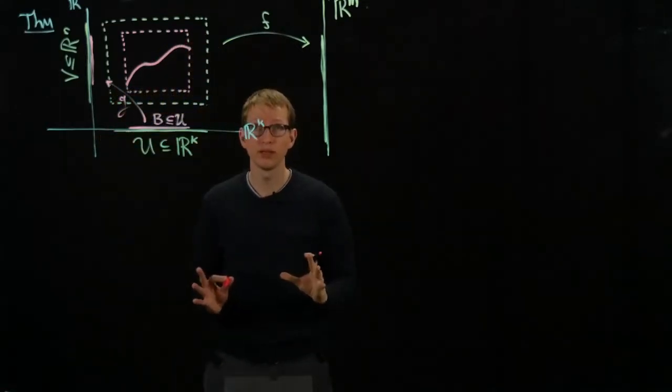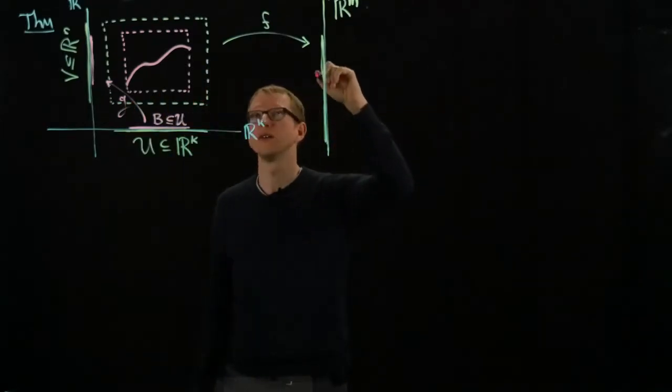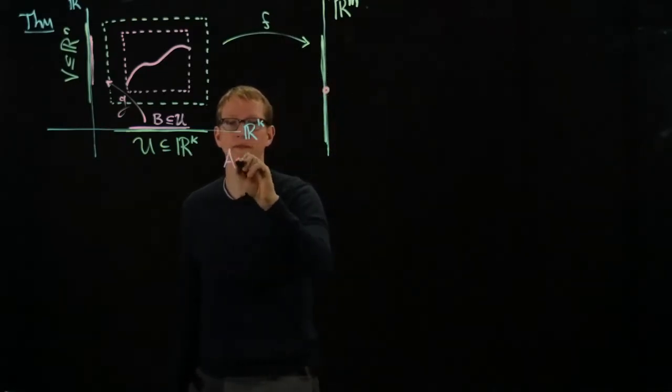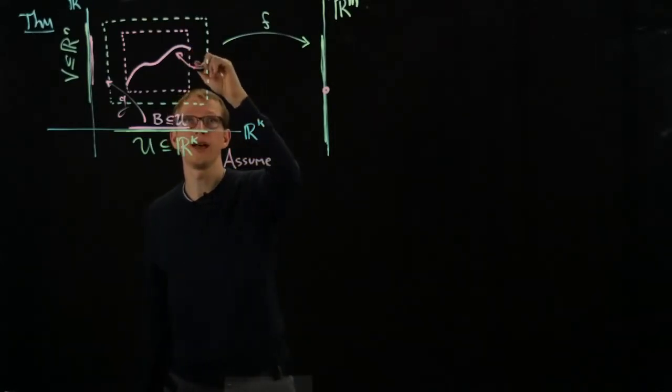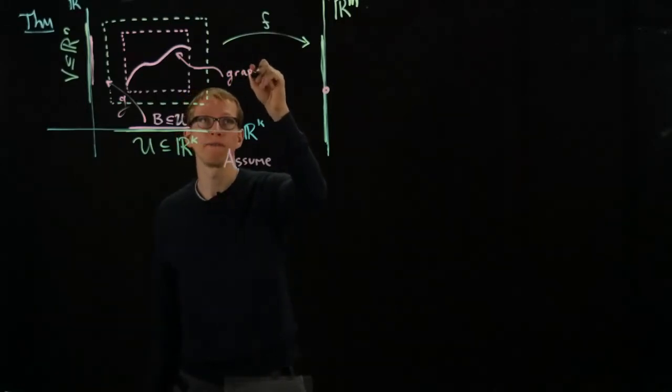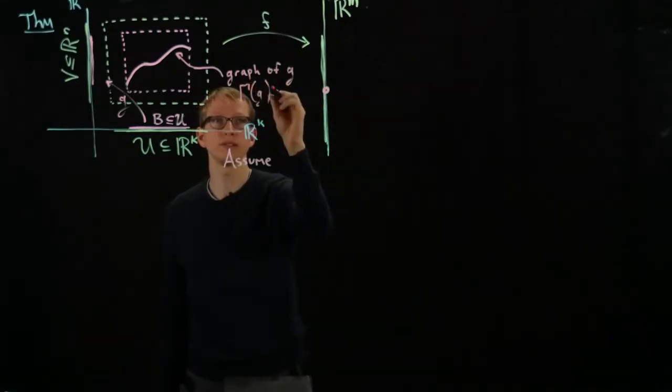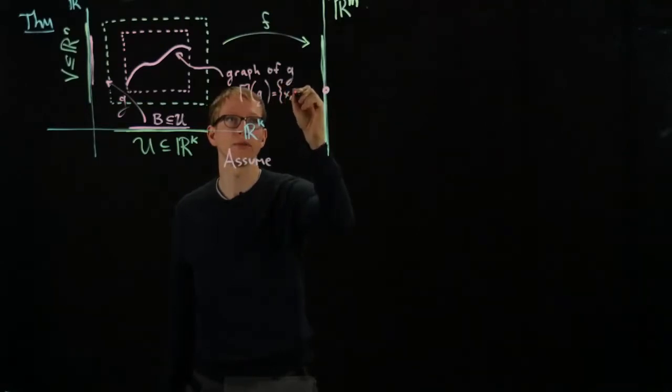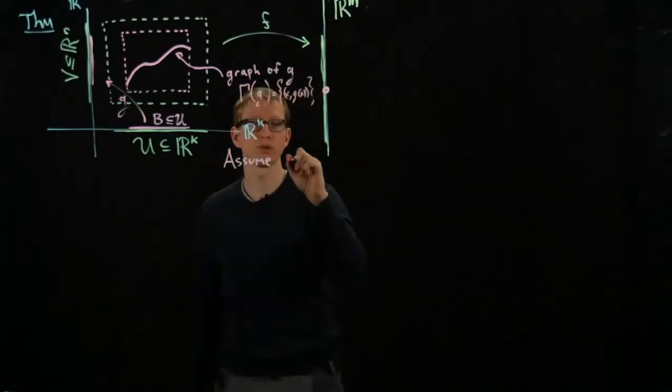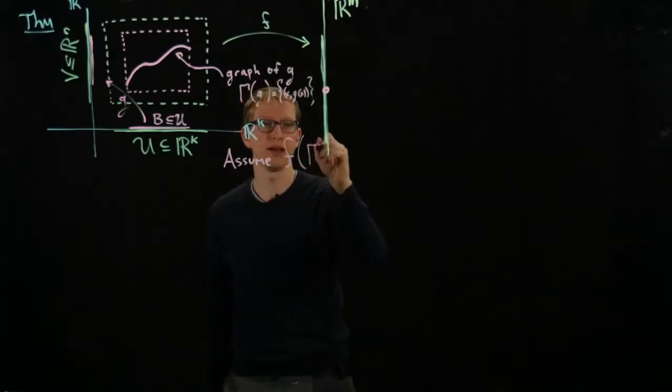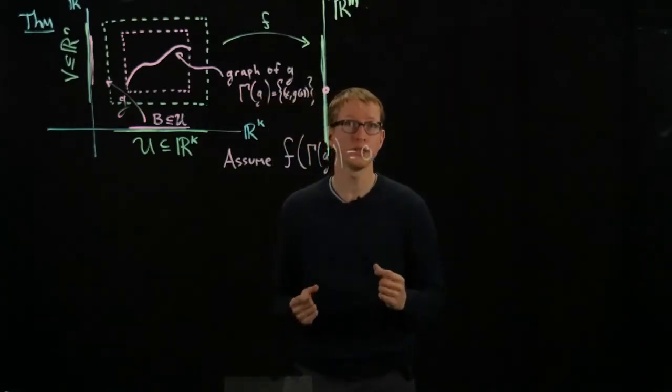And we assume that F applied to this graph gives us 0. So let's call this the graph of G, denoted with gamma of G. It equals the set of points (X, G(X)) such that X is in the domain B. So assume that F applied to this graph is 0.